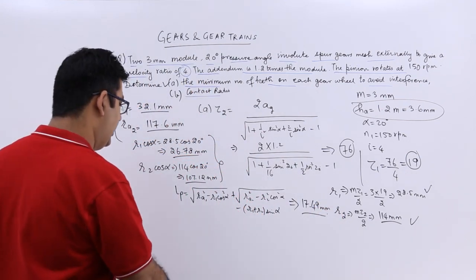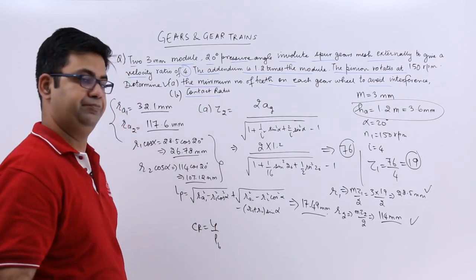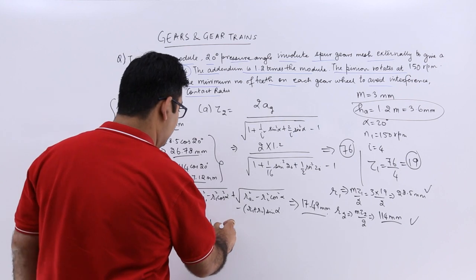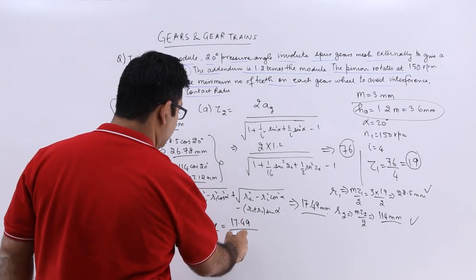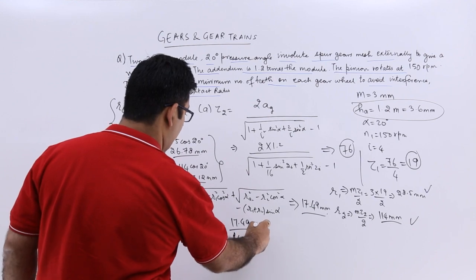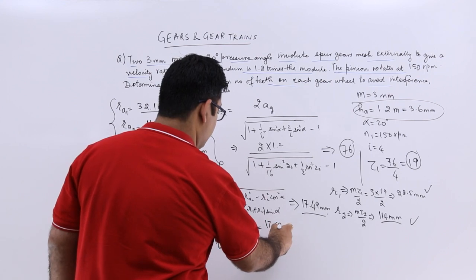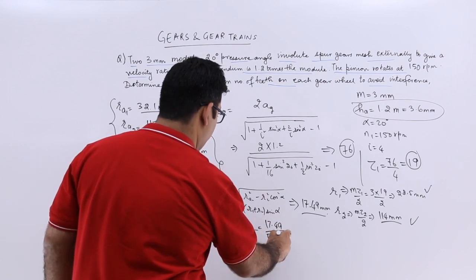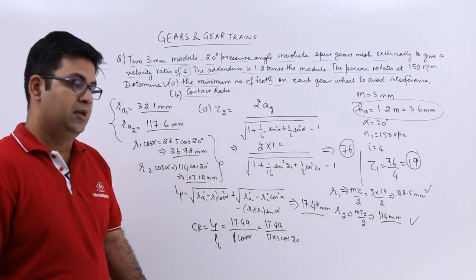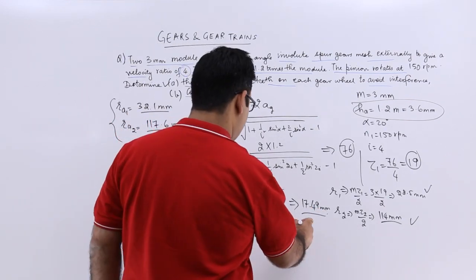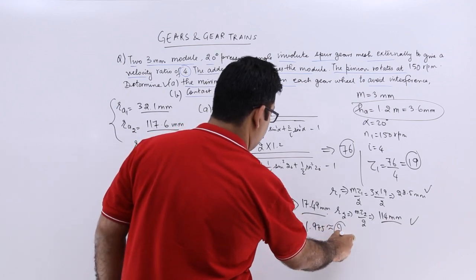Your contact ratio is Lp upon base pitch. It is 17.49, base pitch is P cos alpha. Now P is pi into module. You get 17.49 upon pi into module which is 3 into cos 20. This will result in a value which is 1.975 which is almost equal to 2.